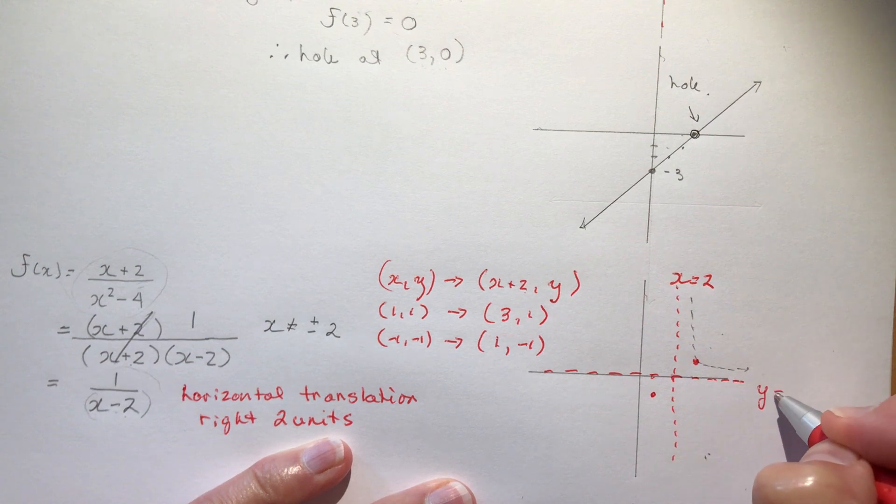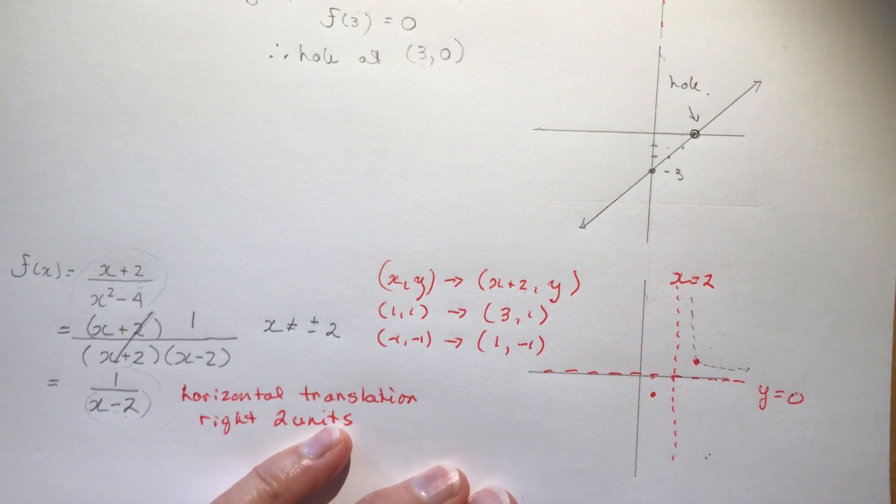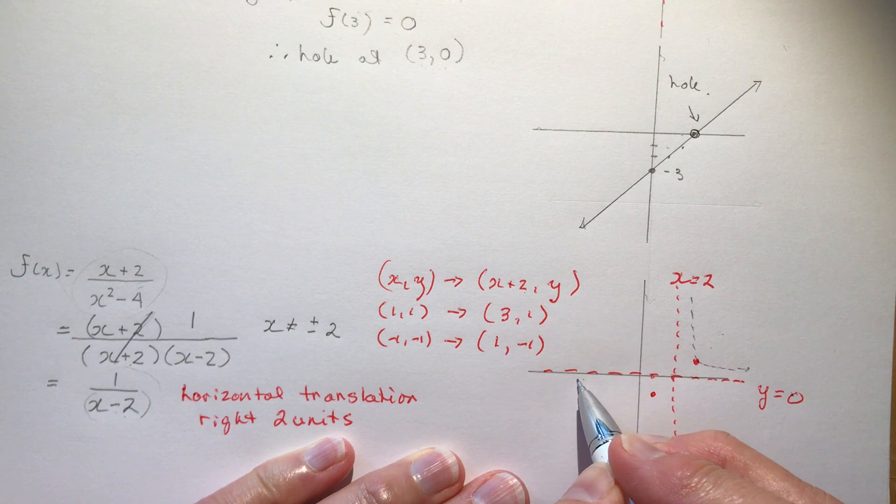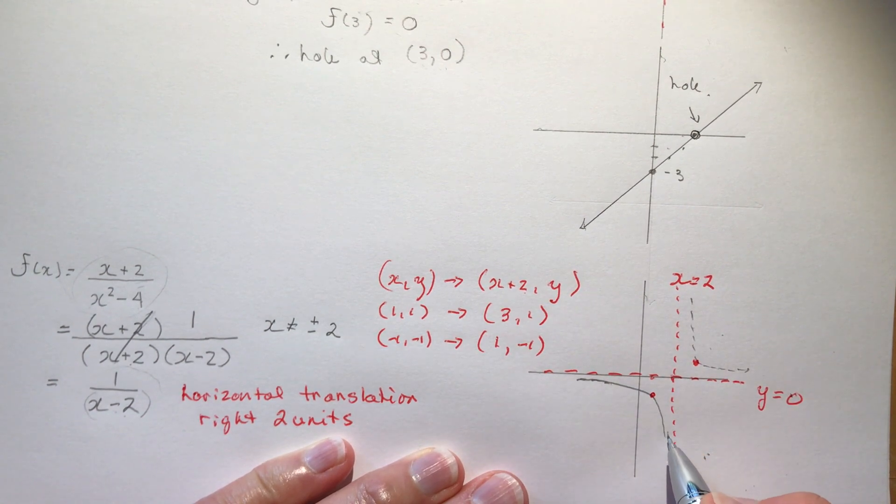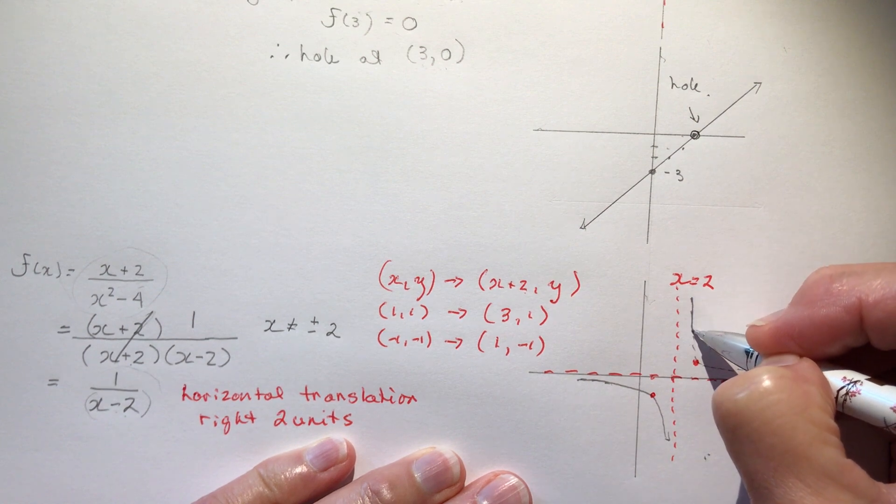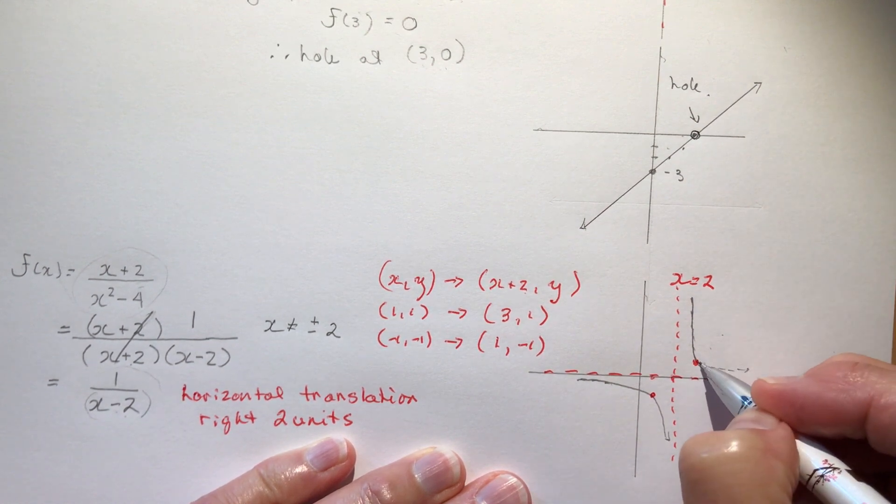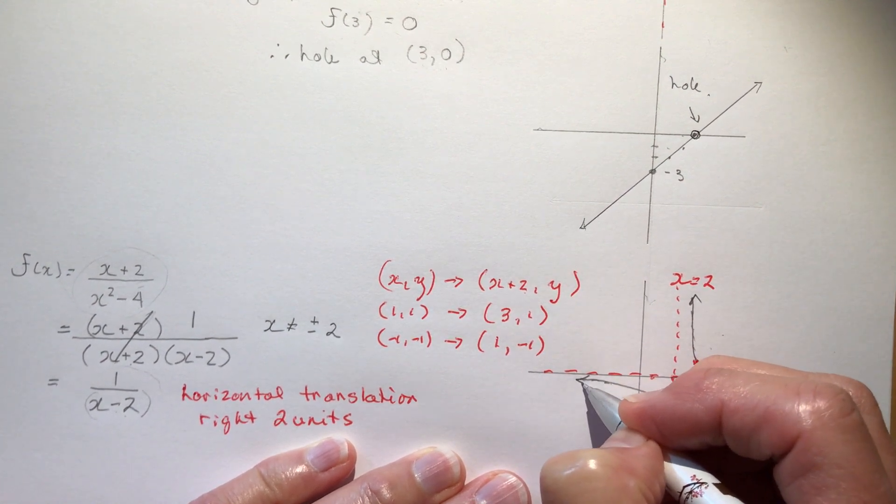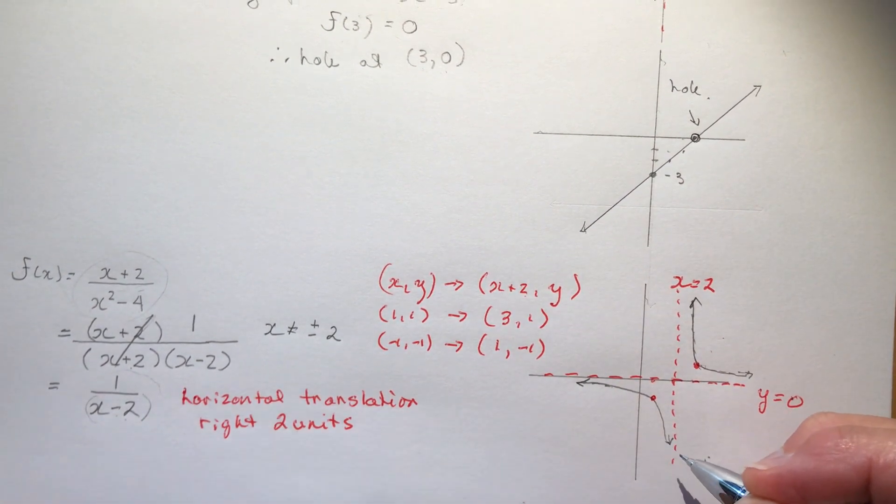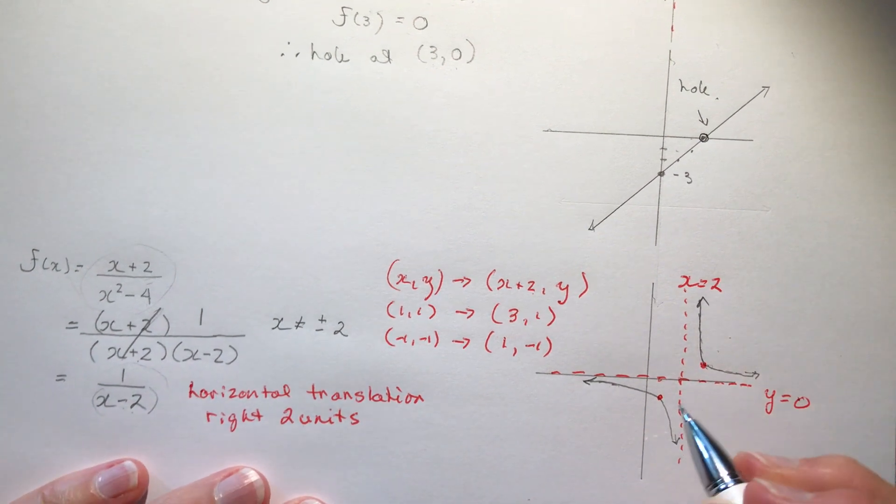Now I'm not going to dot this one, I shouldn't have because it's a continuous function with a vertical asymptote at x equals 2. Now we're missing one thing and that is well what about this x equals minus 2?